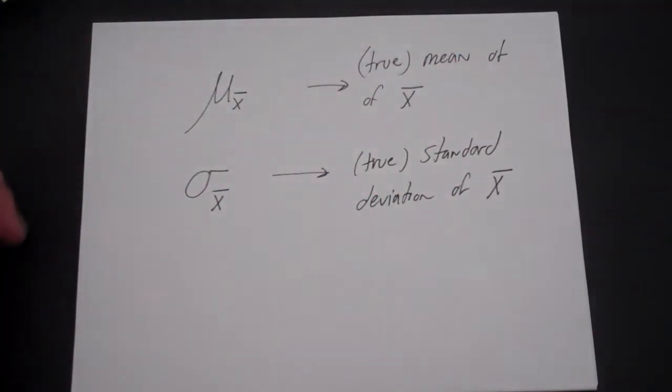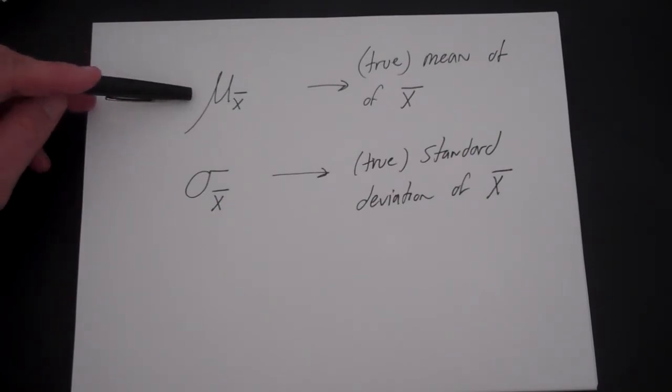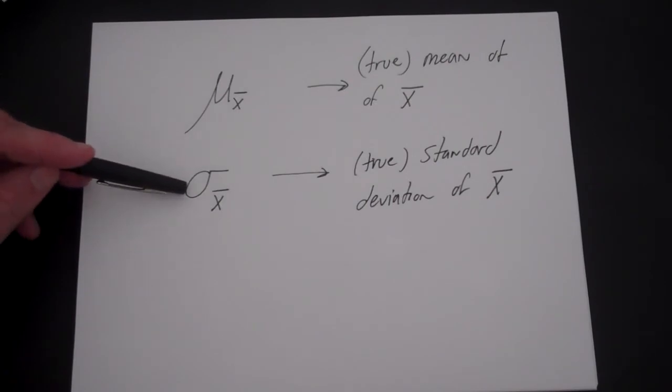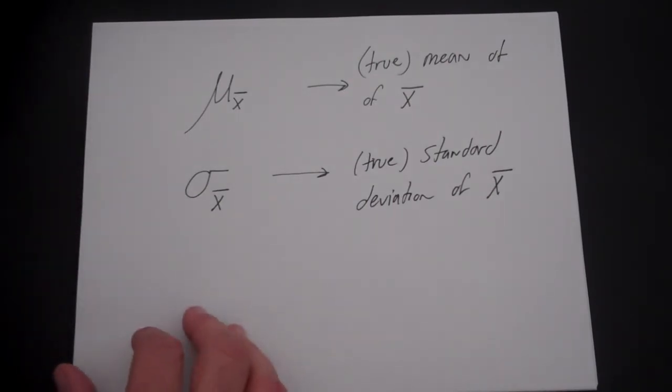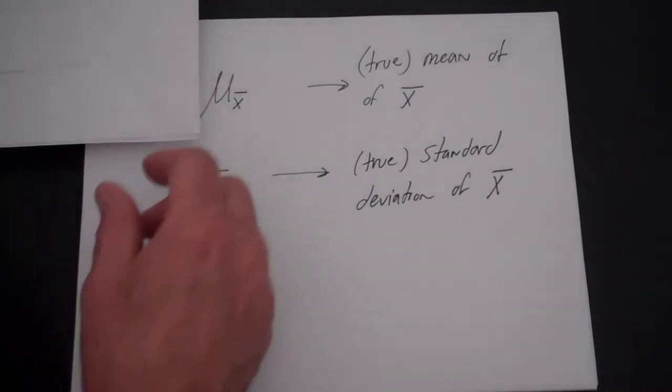In other words, you would get on average a certain value for x bar and a certain standard deviation for x bar if you repeated this over and over again.